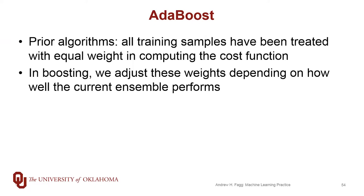AdaBoost is one particular implementation of boosting. In the prior algorithms that we've talked about, we've treated all of our training samples as being equally important with respect to the cost function — so for computing mean squared error, each point contributes equally to that MSE measure. In the general boosting idea, we can actually imagine assigning different weights to each of the training samples. And with boosting, we can adjust these weights dynamically depending upon which training samples are being covered well by the current set of models.